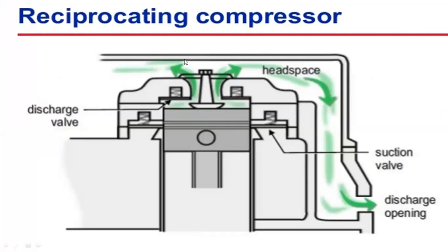This is a typical reciprocating compressor. We have a piston and a cylinder arrangement. On the discharge side, we have the discharge valve on the top, and on the suction side, we have the suction valves. This is a cross-section of a circular cylinder, and this is a piston. When we take it in a Y cross-section, we are able to see the piston.